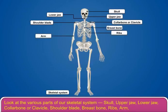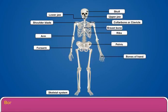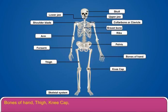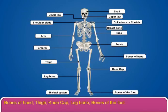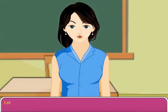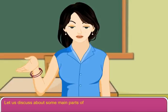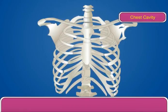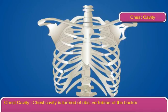Other parts include the arm, forearm, pelvis, bones of the hand, thigh, kneecap, leg bone, and bones of the foot. Let us now discuss some main parts of our skeletal system. The chest cavity is formed of ribs, vertebrae of the backbone, and the breastbone.